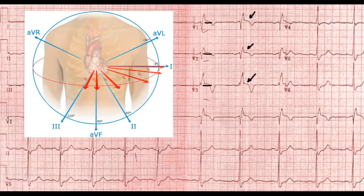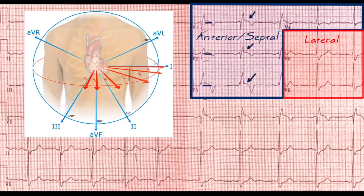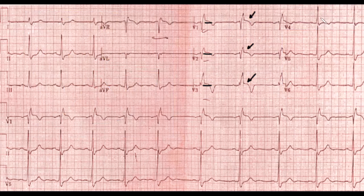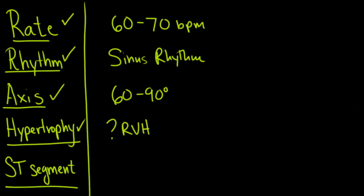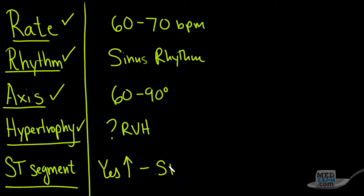Because the ST changes are in the precordial leads, we're looking at right ventricular and anterior left ventricular involvement. Notice we don't see changes extending to the lateral leads. The answer is yes — there is ST elevation consistent with an ST segment elevation myocardial infarction.